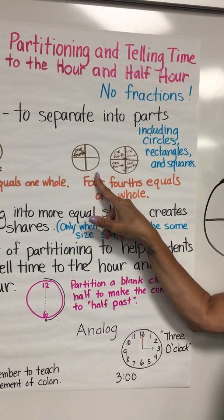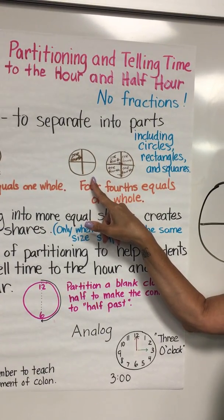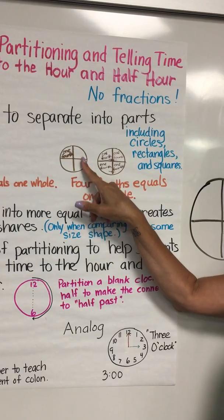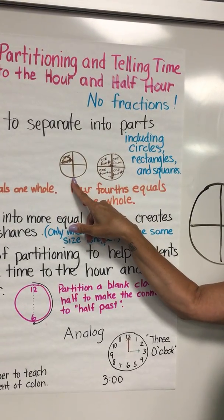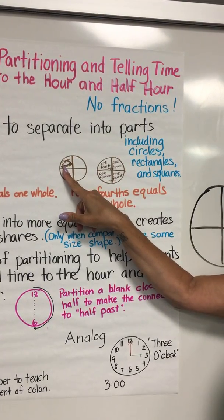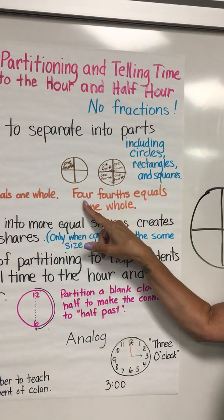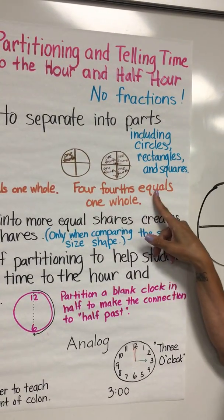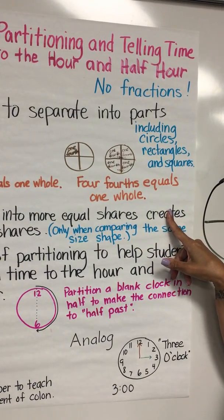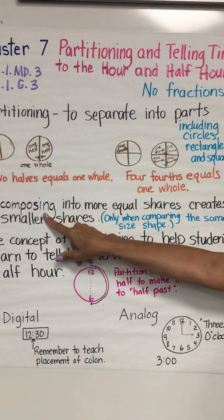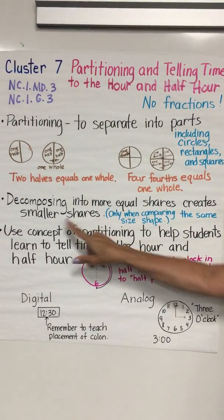This is the same concept using fourths. Please note we will not be using the term quarters — we will only be using fourths to represent one fourth of the piece. Here our circle is partitioned into fourths, and this represents one fourth. Over here we have labeled all of the fourths, using very specific language that four fourths equals one whole.